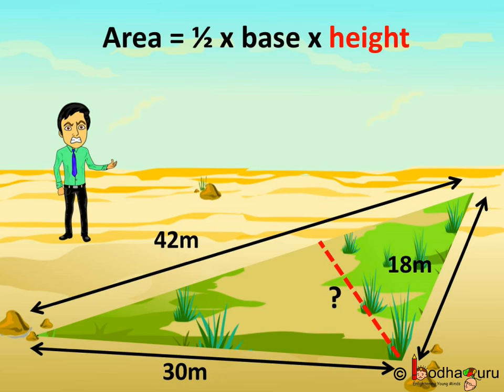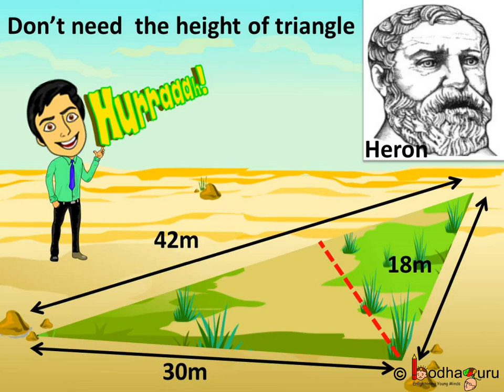We already know that the area of a triangle is half of base multiplied by height. Now, do you have to go through the trouble of drawing a perpendicular on a side till the opposite vertex to find the height of this triangle? Then, how to find the area of this land without its height?